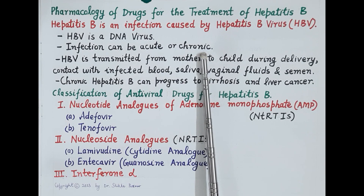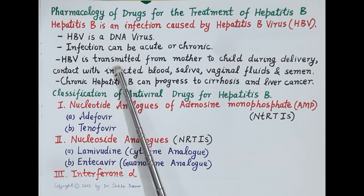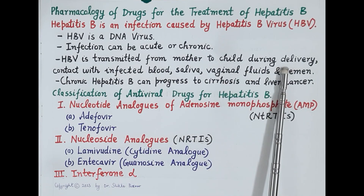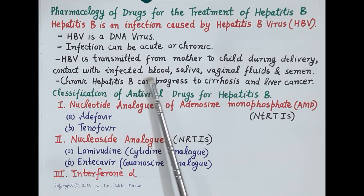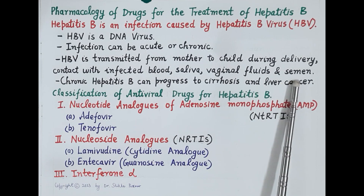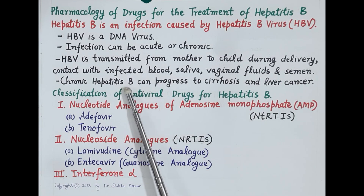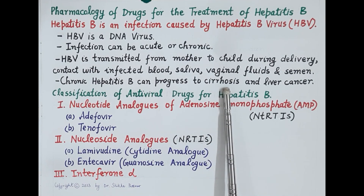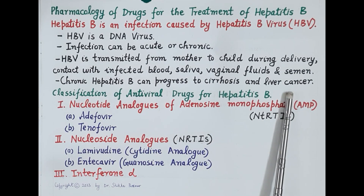Hepatitis B is transmitted from mother to child during delivery, and also by contact with infected blood, saliva, vaginal fluids, and semen. Chronic hepatitis B, if not treated, can progress to cirrhosis of the liver and liver cancer.